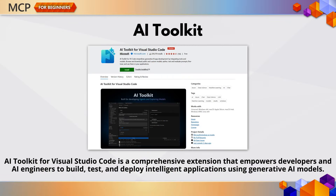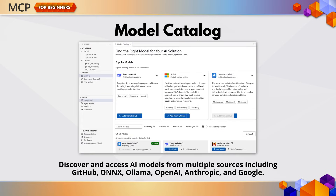Let's start with Module 1. Module 1 is all about getting familiar with the AI Toolkit extension in VS Code. Once installed, you get access to a full AI development environment right inside your editor. You'll start with the model catalog, where you can explore over 100 models from OpenAI to GitHub-hosted models. Whether you're doing creative writing, code generation, or analysis, there's something for every use case.